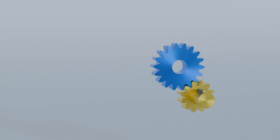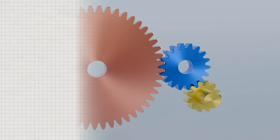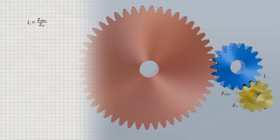The animation shows a yellow drive gear that first drives a blue idler gear, which in turn sets the red output gear in motion. In principle, this is a two-stage gearbox. The yellow drive gear and the blue intermediate gear form the first gear stage, and the gear ratio of this stage results from the ratio of the number of teeth of the two gears.